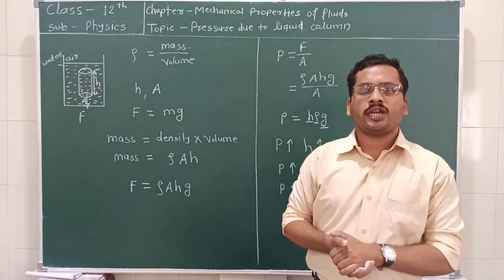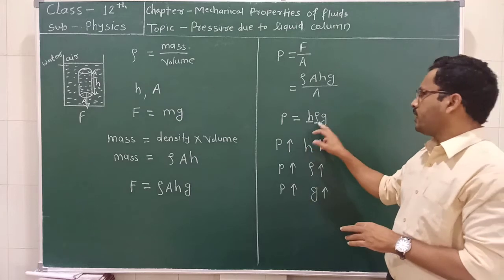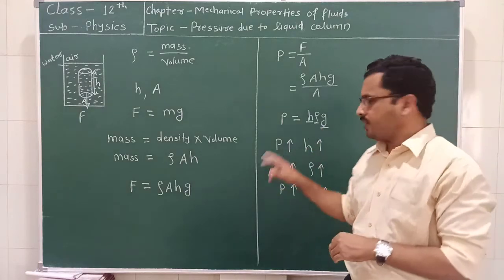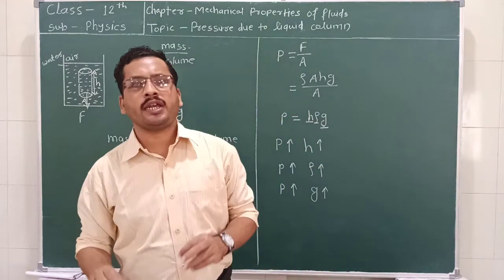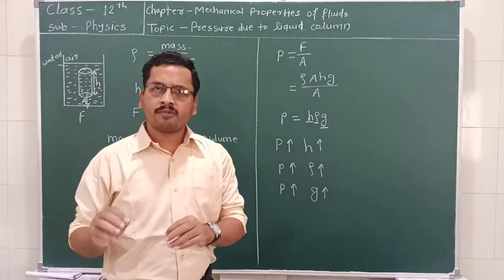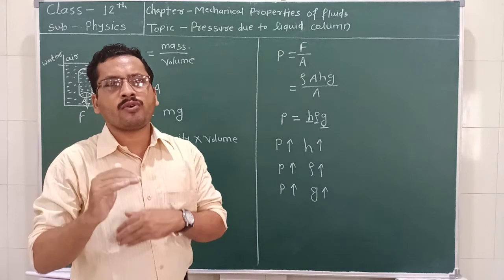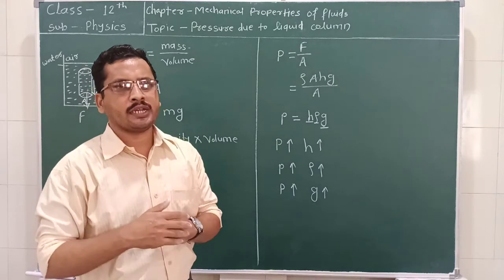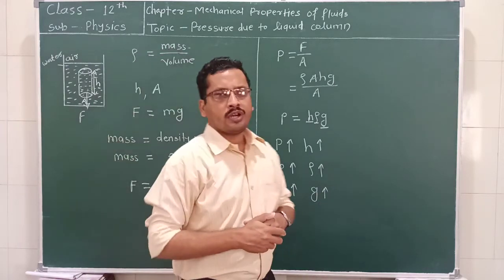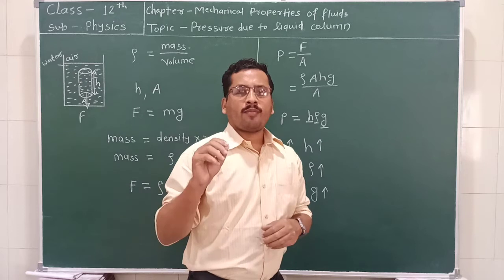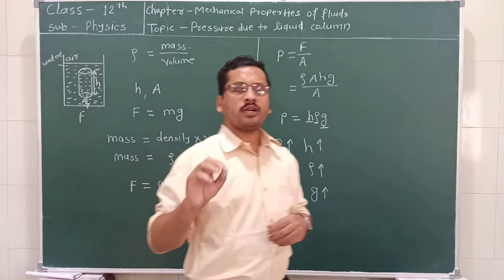Atmospheric pressure depends upon some factors. As we know, pressure depends upon height, density, and gravity. The maximum pressure is exerted at sea level. About 8 km of air column is considered above the sea level, meaning the effective height of the atmosphere is taken as approximately 8 km.